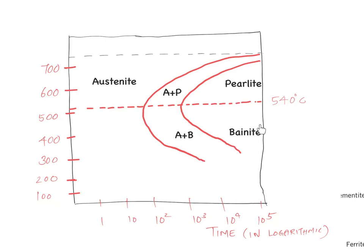So, between approximately 215 degrees centigrade and 540 degrees centigrade, bainite is the transformation product. From 540 degrees centigrade to 727 degrees centigrade, pearlite is the transformation product. Pearlite can be either coarse or fine pearlite, as discussed previously.